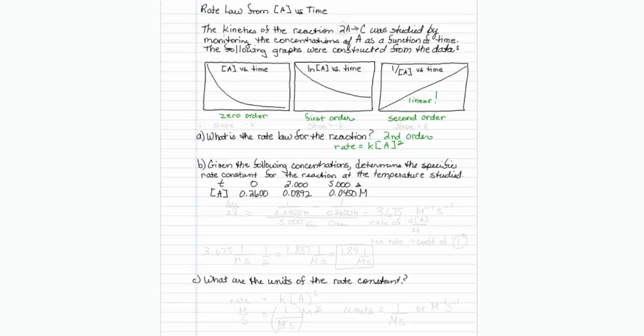Okay. The next part says, given the following concentrations, determine the specific rate constant for the reaction at the temperature studied. Alright. Well, essentially what we need is the slope of the line.